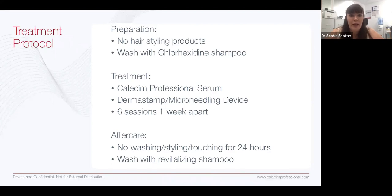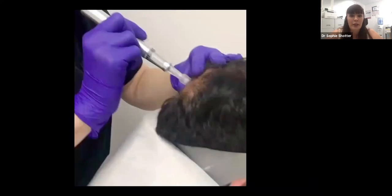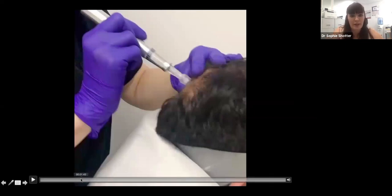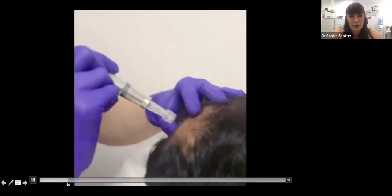What we've been doing with our treatment protocol - we've used this on men and women - in preparation, we ask patients to come with no hairstyling products on and to wash their hair with chlorhexidine shampoo on the day of treatment. We do a treatment with the calecin professional serum and either a derma stamp or a micro needling device. We do six sessions a week apart. Aftercare: no washing, touching, or styling for 24 hours. And we recommend a particular revitalizing shampoo to use between sessions.